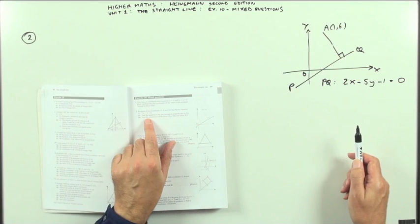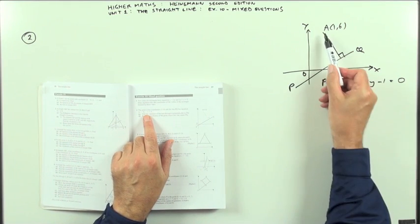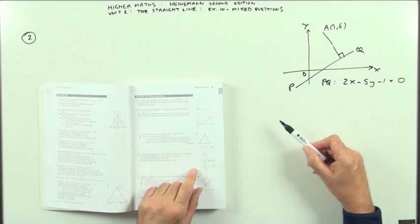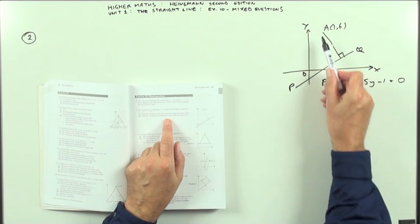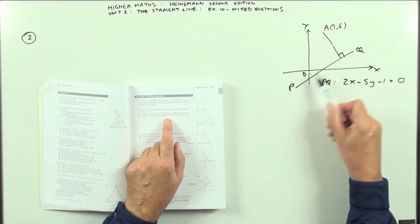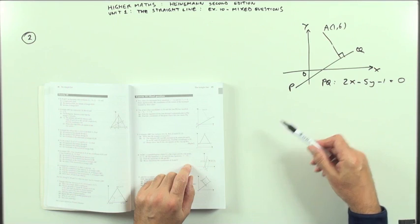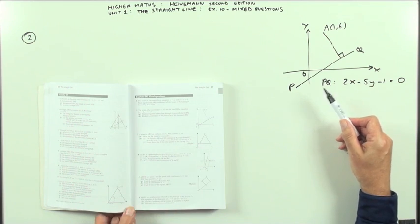There's a diagram drawn for this. So it says it gives you the coordinates of A and it gives the line PQ and it wants to find the equation of the line from A which is perpendicular to PQ. And then secondly, find the point where it meets that.